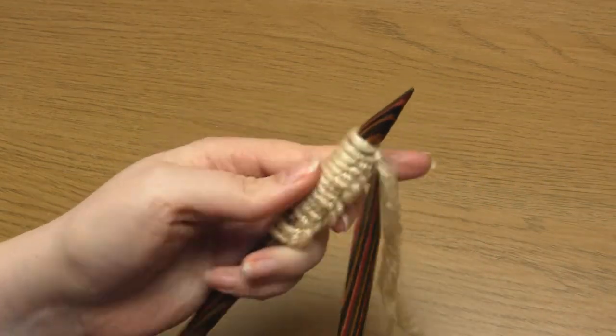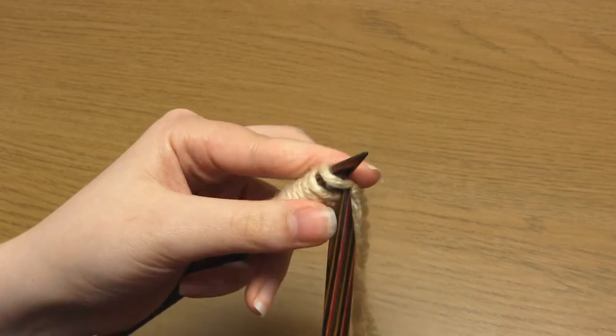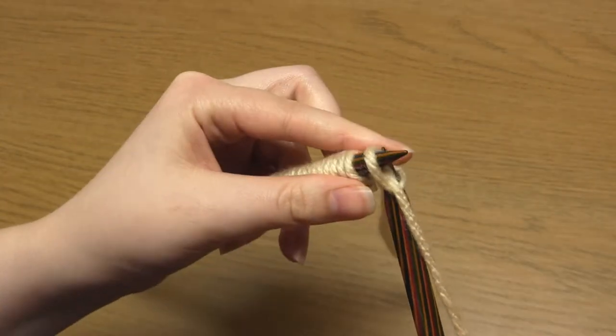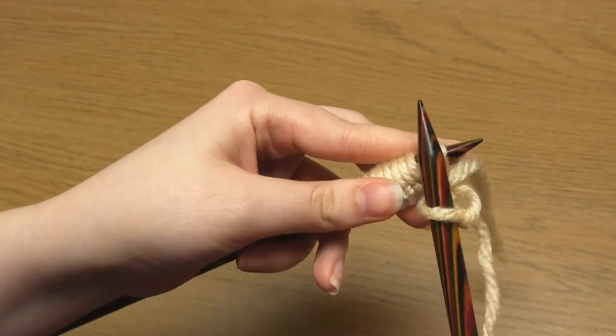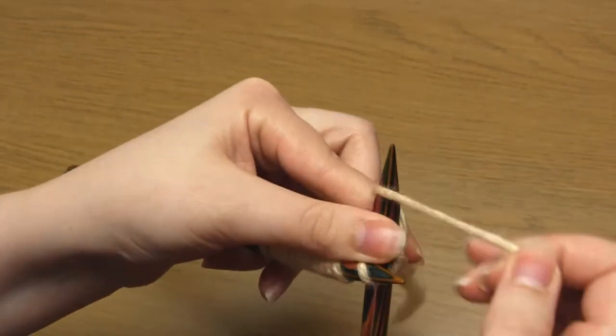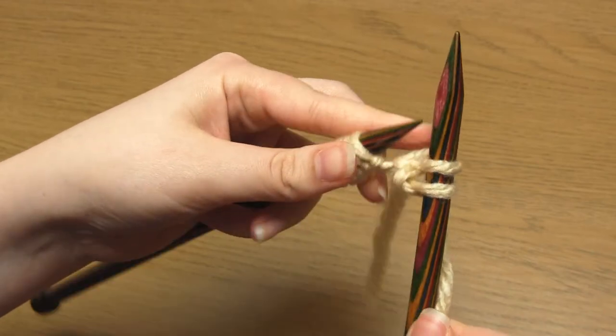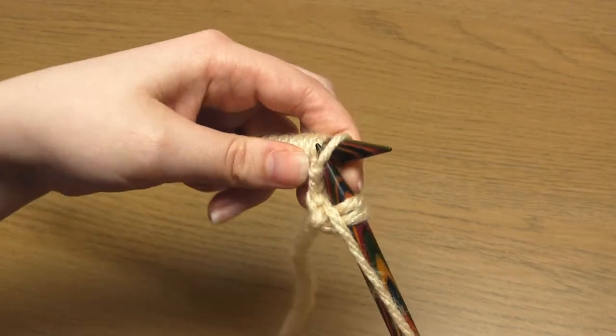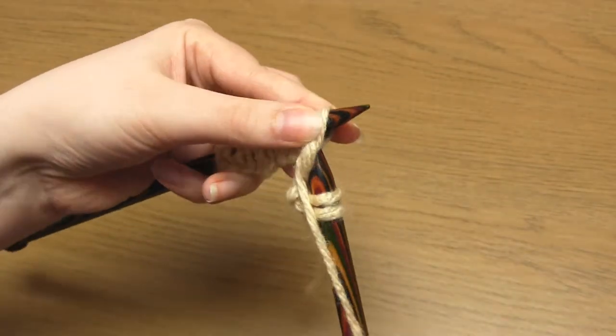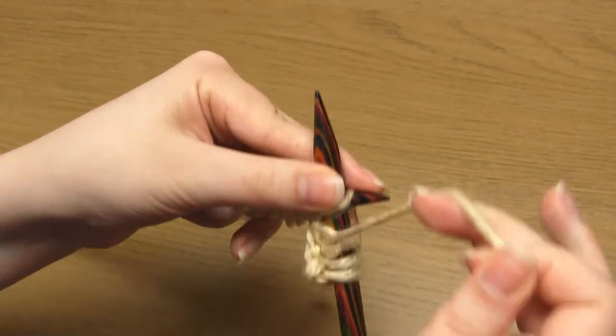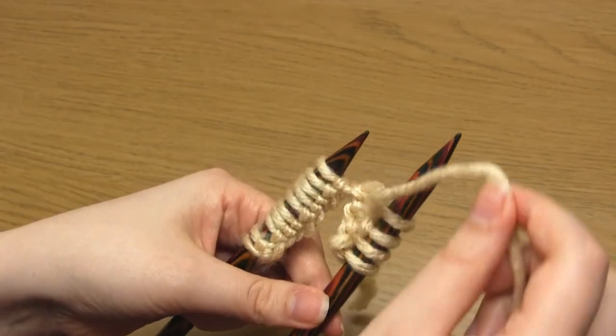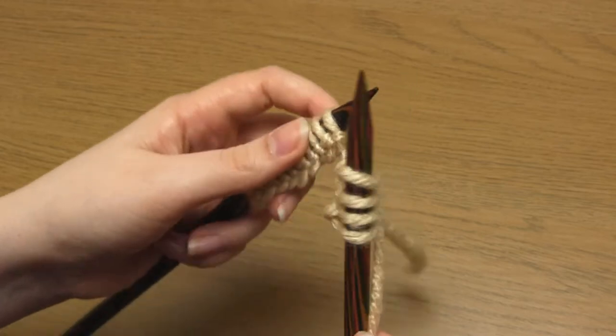For row one you need to begin by knitting two stitches. Then you bring the working yarn between the needles to the front like so and purl two stitches.